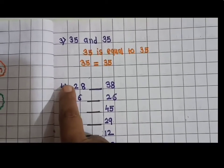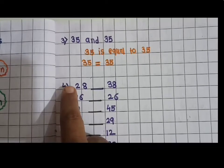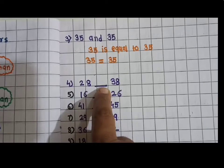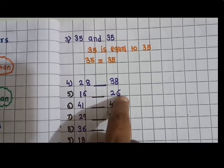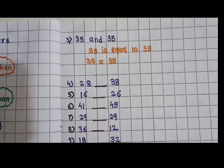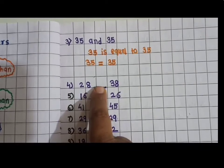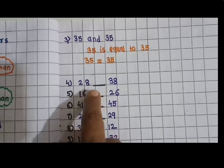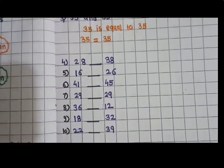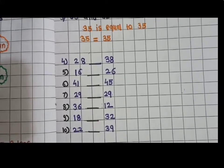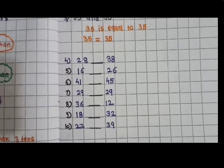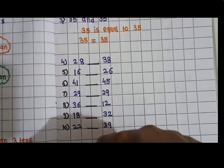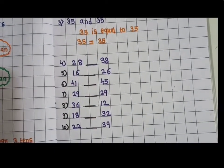Now here are some examples: 28 dash 38, 16 dash 26, 41 dash 45, 23 dash 29, 36 dash 12, 18 dash 32, 29 dash 39. Now you have to put the proper sign of comparing numbers: less than, greater than, or equal to. And like this you have to complete this activity. You can take different numbers for comparing, you can take your own numbers, up to 50.